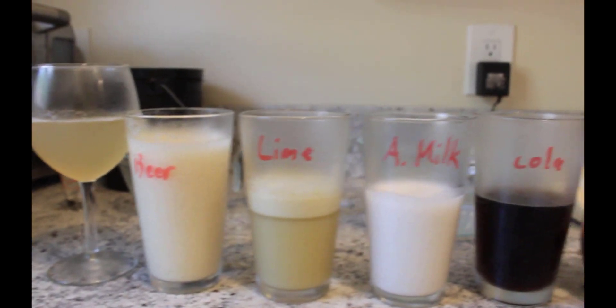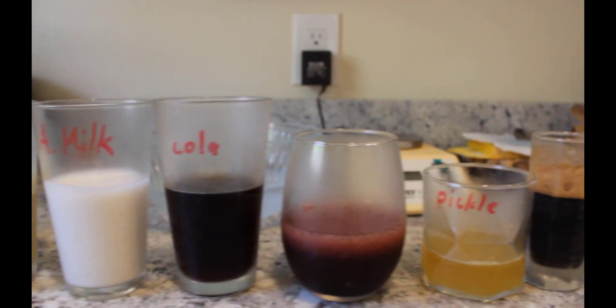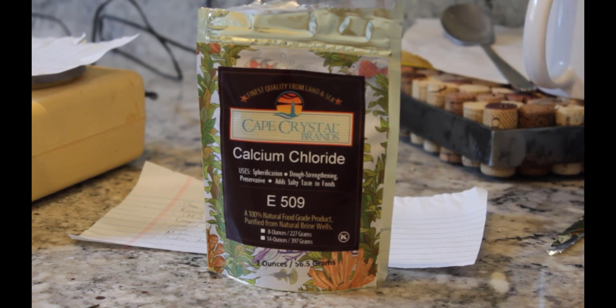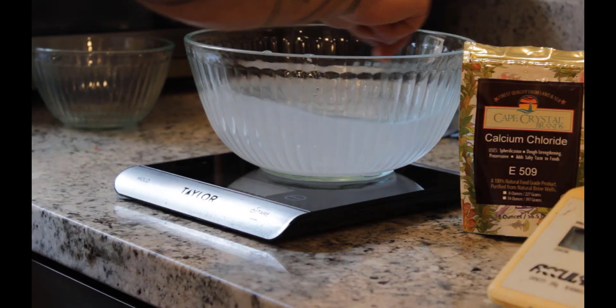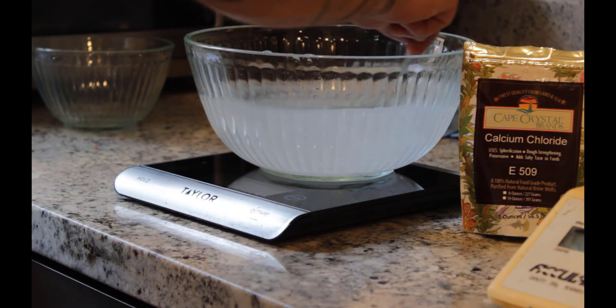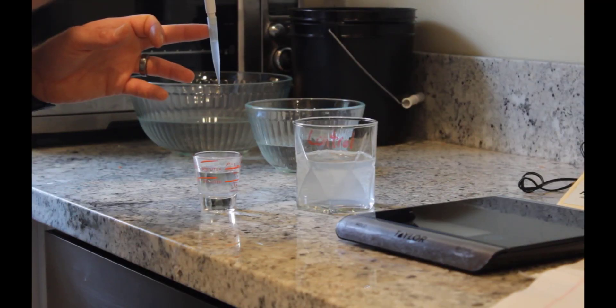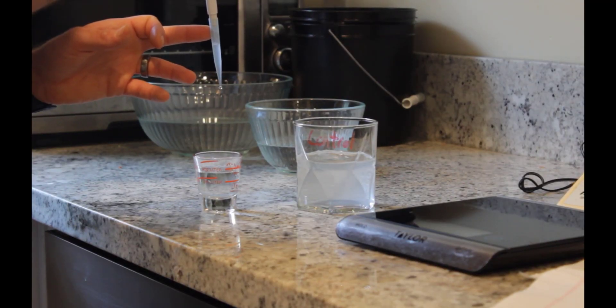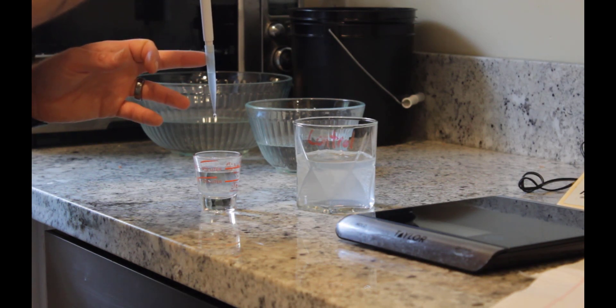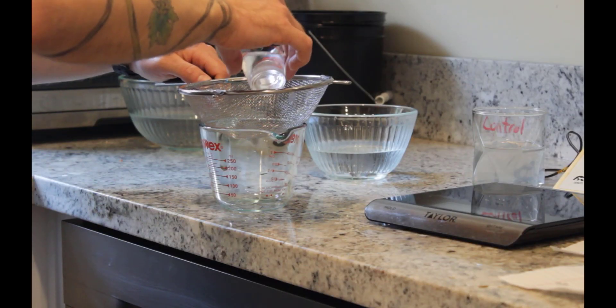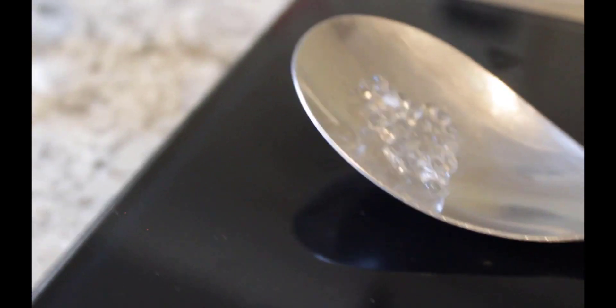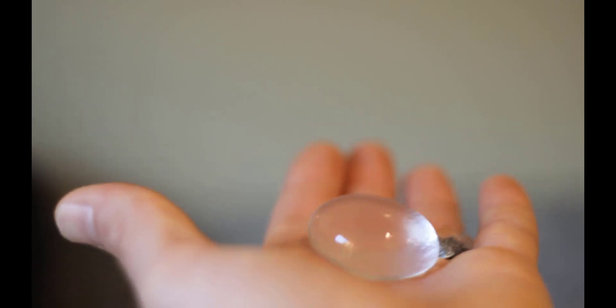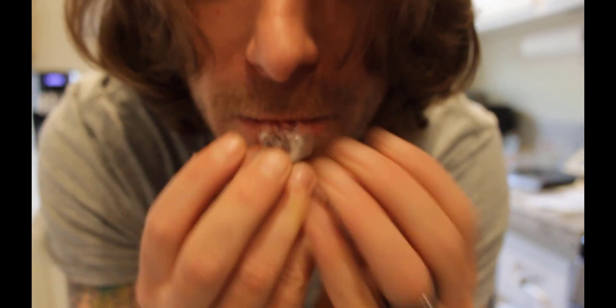After incubating for an hour to give some of the foam produced during blending a chance to collapse, I dissolved 5 grams of calcium chloride and 1,000 grams of water to produce a 0.5% solution of calcium chloride. This will act as our reactant bath. To start, I first tried the water. It was impossible to see if any coagulation was occurring as I dripped the alginated water into the calcium bath, but when I strained out the solution, sure enough, there were tiny little water pearls caught by the sieve.